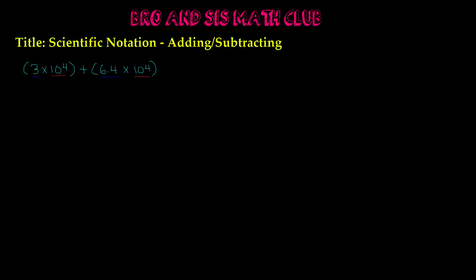Now this problem is extremely easy because we have the same exponents. When you have the same exponents and you're adding or subtracting in scientific notation, you're basically just adding or subtracting the constants. So we're going to add 3 and 6.4, which gives us 9.4. Since the exponents are the same, they stay the same — 10 to the 4th power. So our solution is 9.4 times 10 to the 4th power.